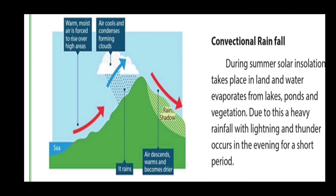Convectional rainfall: During summer, solar insolation takes place on land and water evaporates from lakes, ponds, and vegetation. Due to this solar radiation, a heavy rainfall occurs with lightning and thunder in the evening for a short period of time. This is called convectional rainfall.